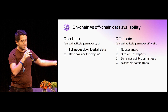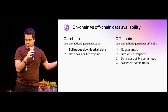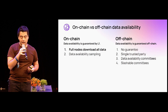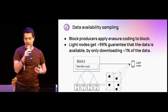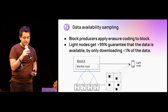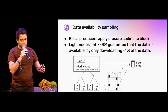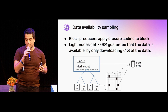The most obvious data availability solution is full node download of all data, but as mentioned, that's not scalable. Another on-chain mechanism to make data availability more scalable is called data availability sampling. The general principle is that block producers commit to an erasure-coded version of the block, which allows light nodes to download random chunks. Downloading random chunks gives them an extremely high probability guarantee that 100% of the data is available by only downloading a very small percentage.